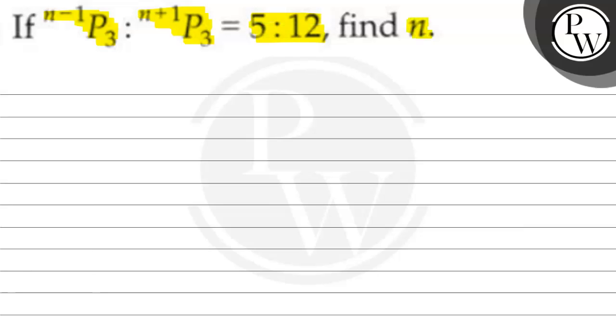We are going to use permutation, which is n P r equals factorial n upon n minus r factorial. And factorial n equals n multiplied by n minus 1 multiplied by n minus 2, it means that each number less than it is multiplied. When it comes to 1, it will not be found.